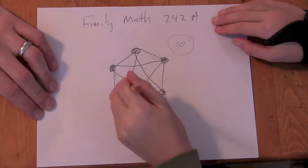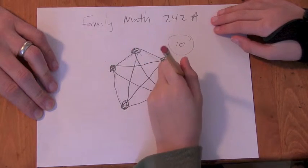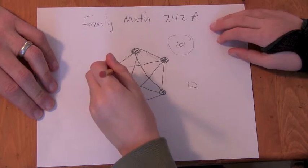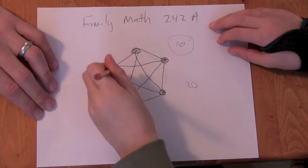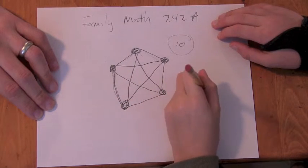So if you counted that, there's four lines coming out of every point, there's five points, so you get twenty. But you double counted everything because this line is the same as that line. So then you have to divide by two.